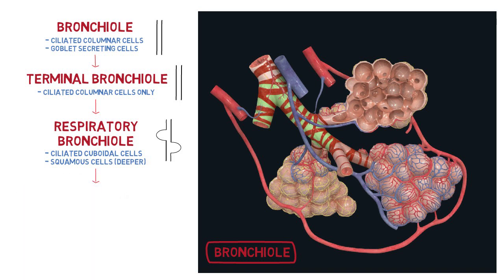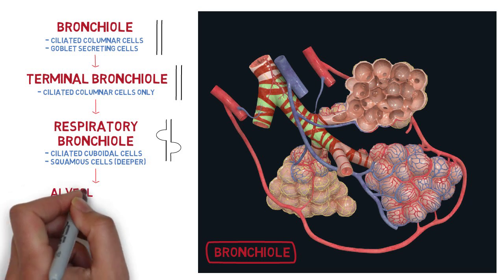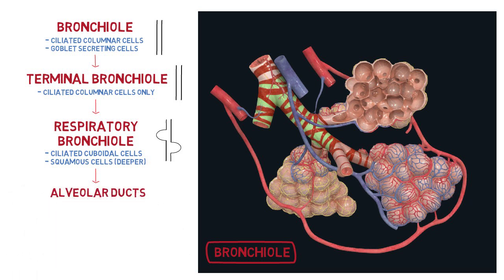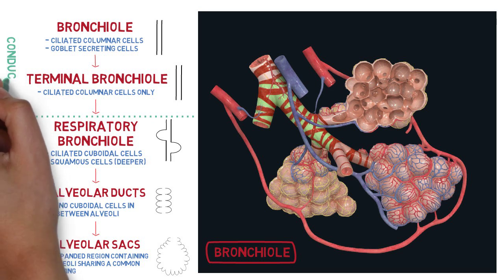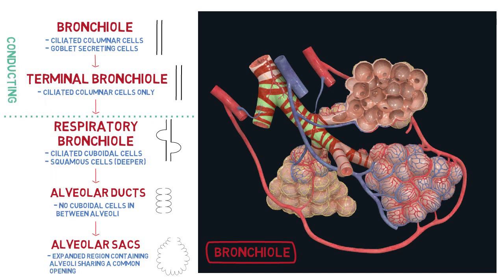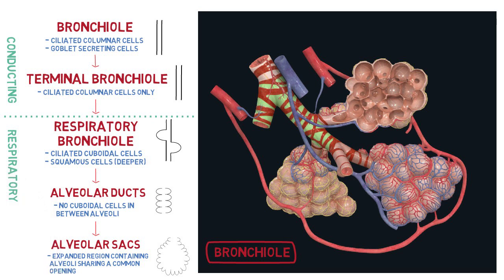The respiratory bronchioles become 2 to 11 alveolar ducts, which have no cuboidal cells in between the alveoli, and these later will become alveolar sacs. Unlike a tube, these are expanded regions full of alveoli. None of the airway components before the respiratory bronchioles can carry out gas exchange, so they are simply called the conducting portion of our airway. They only provide the passage for the air to reach the respiratory portion. This conducting portion ends at the terminal bronchioles, hence the name terminal.